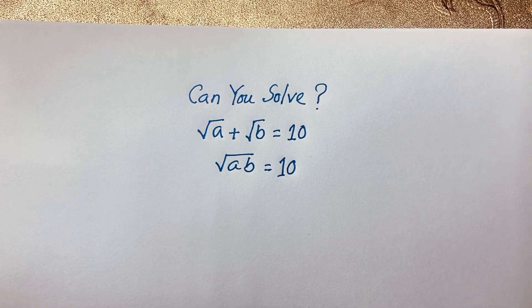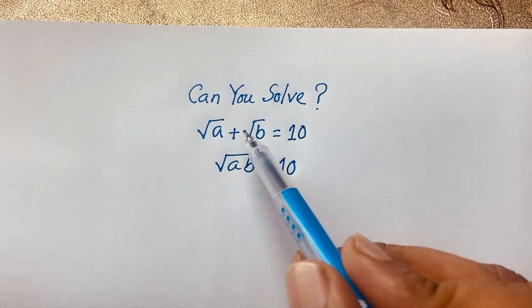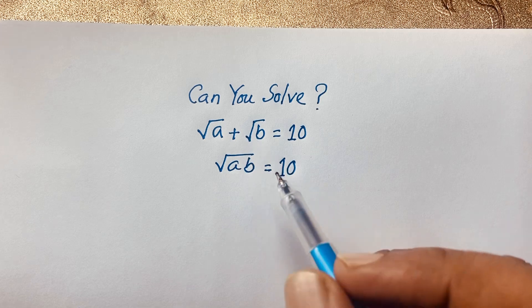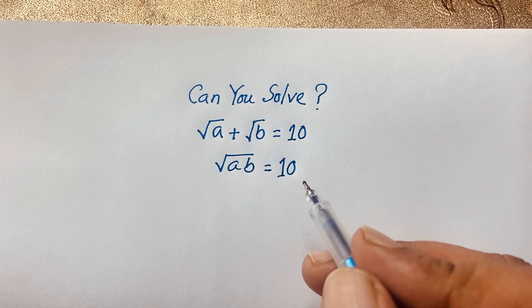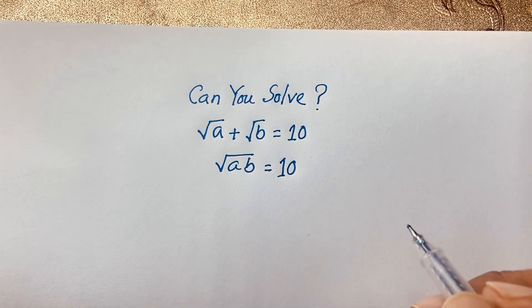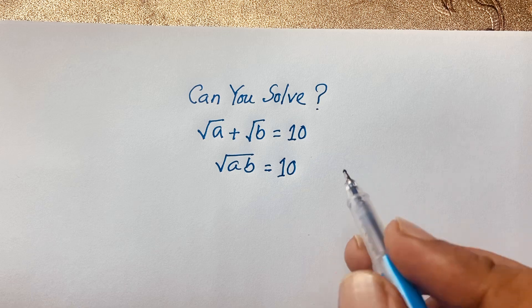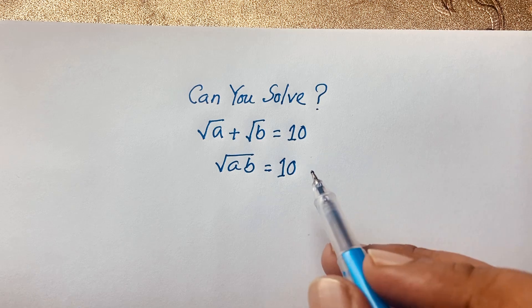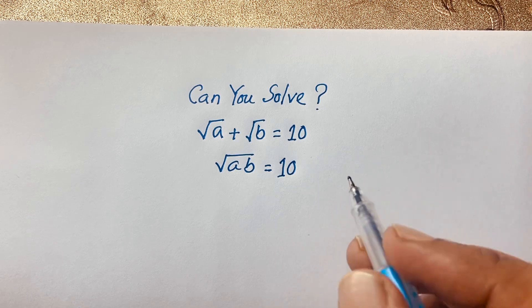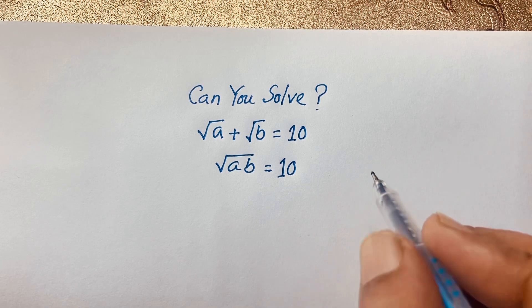Hello everyone. In this video we have solved a nice math problem: square root of a plus square root of b is equal to 10, and square root of ab is equal to 10. We have found out the value of a and b in this Math Olympiad question.